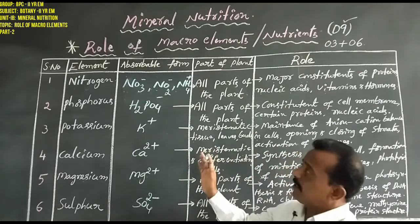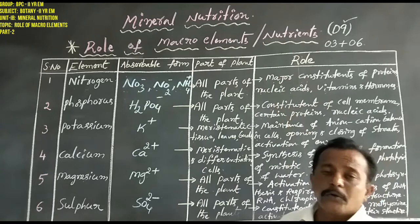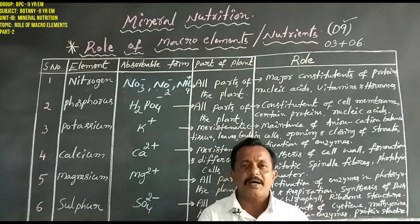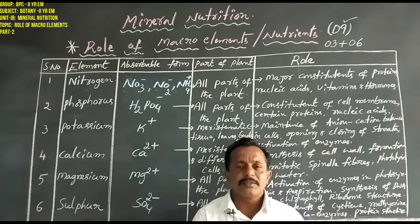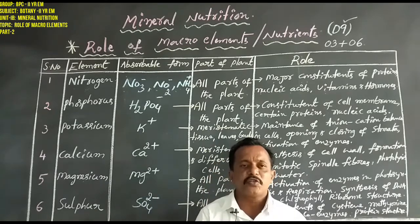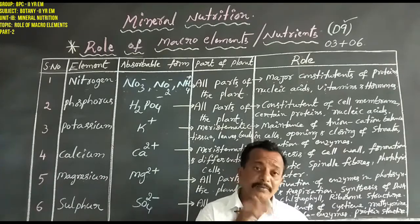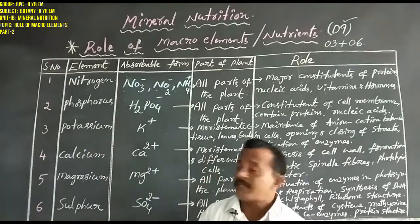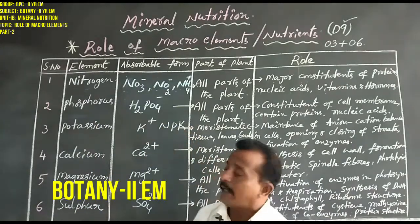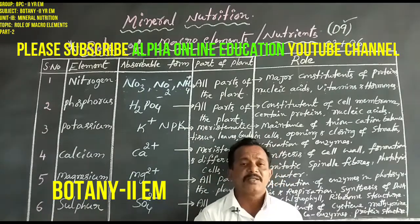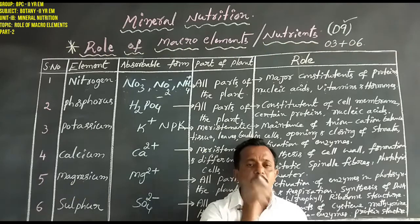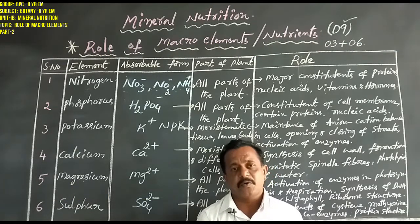Dear students, this completes our discussion of macronutrients. In total there are 9 macro elements, of which 3 are non-mineral or framework elements. The remaining 6 are essential mineral macroelements, and among these, nitrogen, phosphorus, and potassium — NPK — are the three most essential for plant growth and development. Thank you.